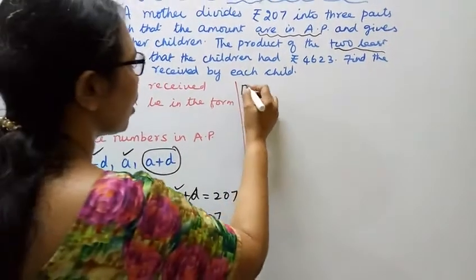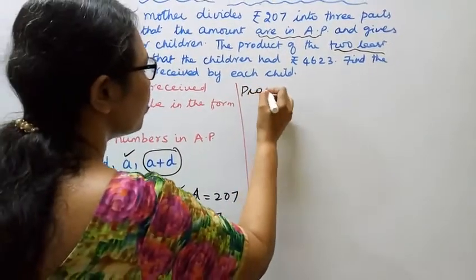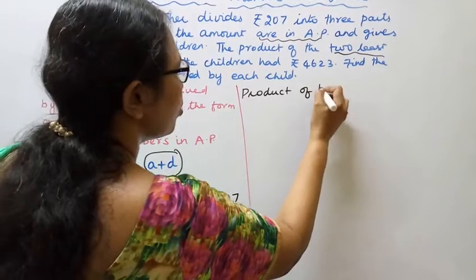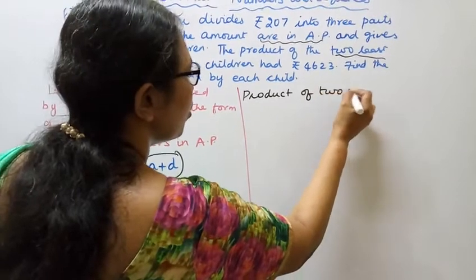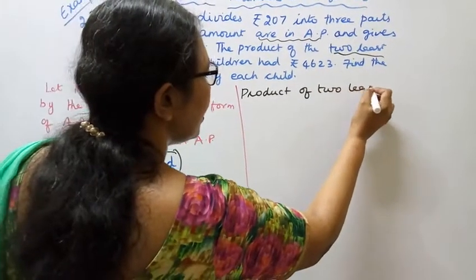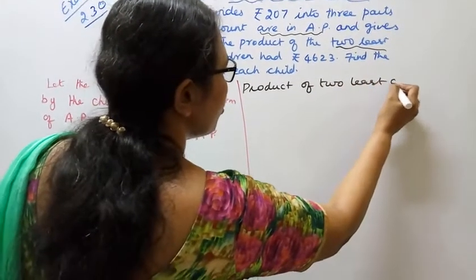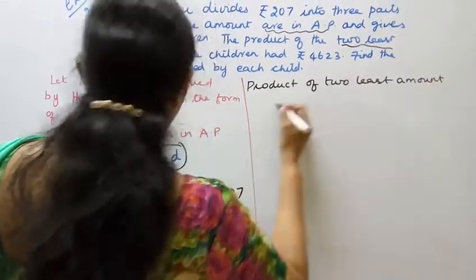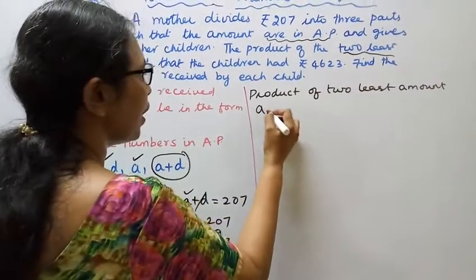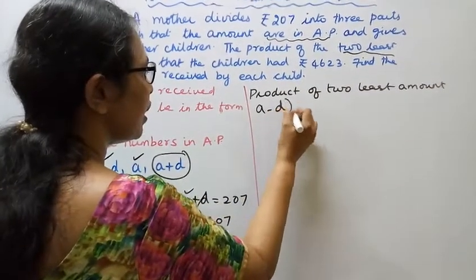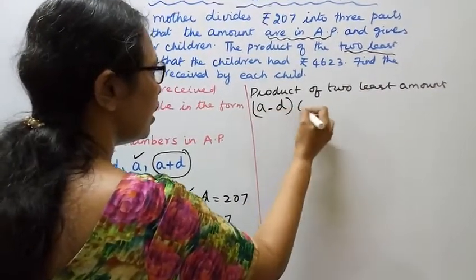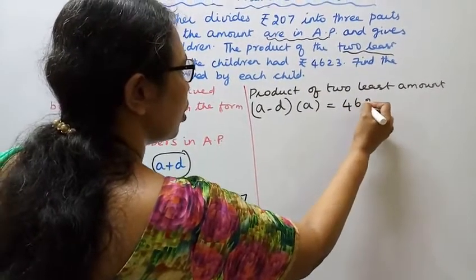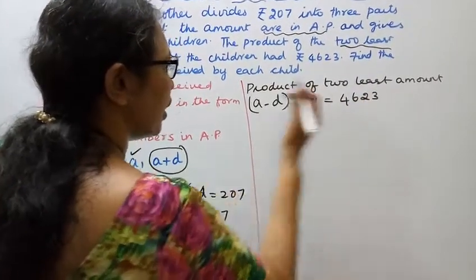Product of the 2 least amounts: (a minus d) into a equals 4,623.